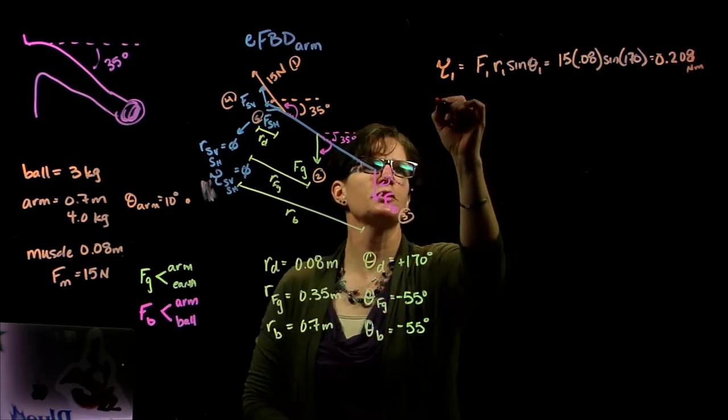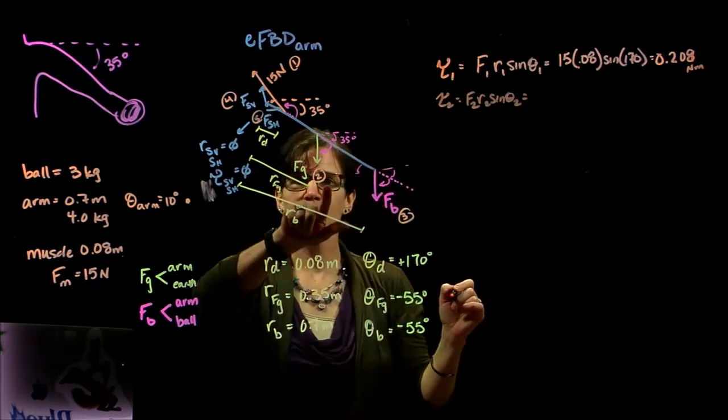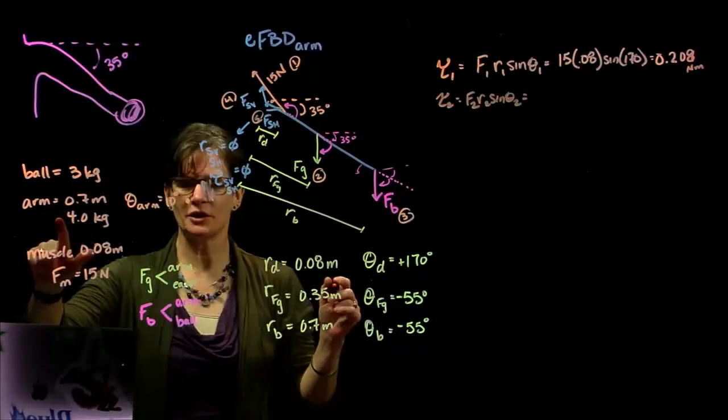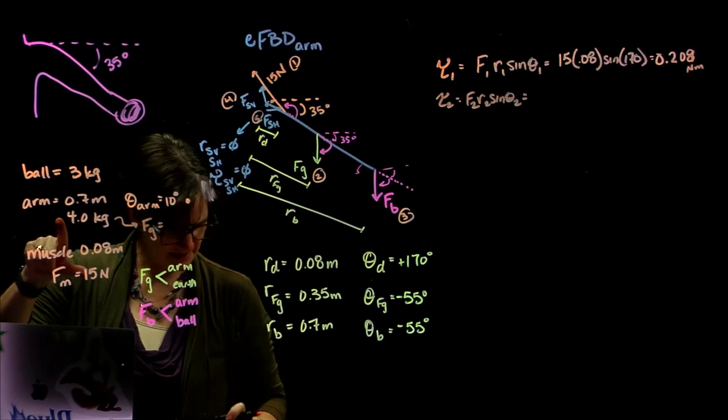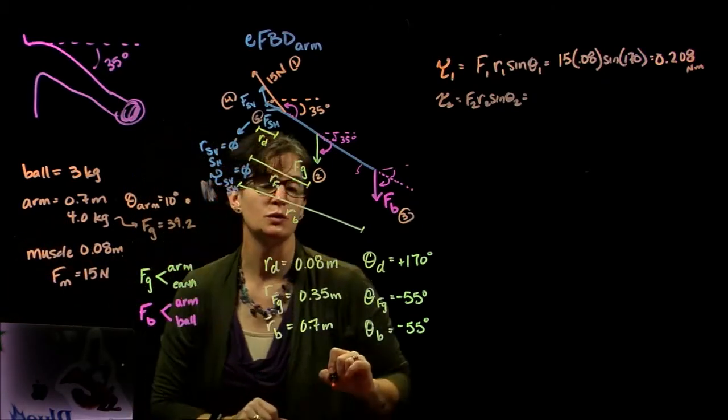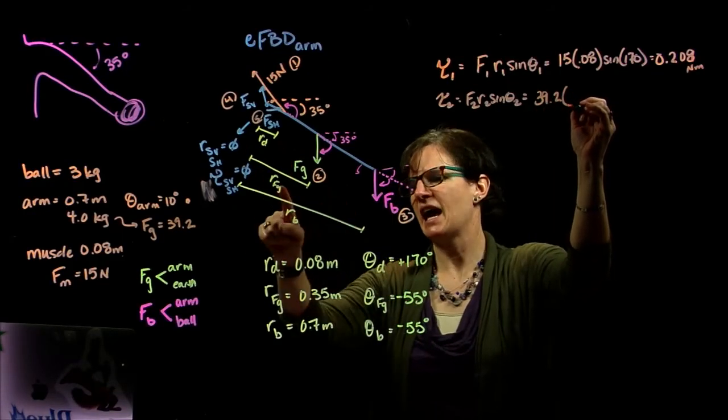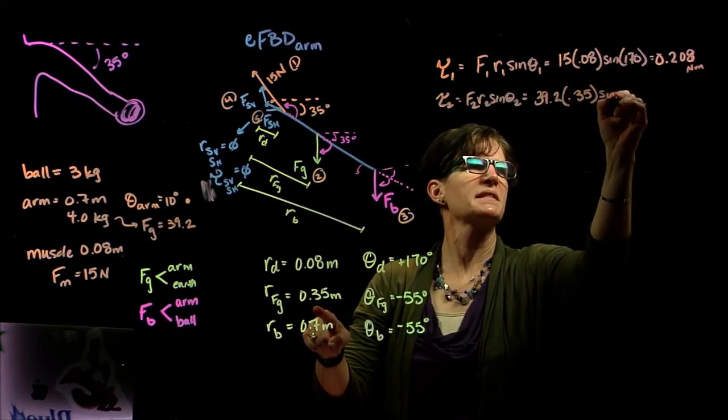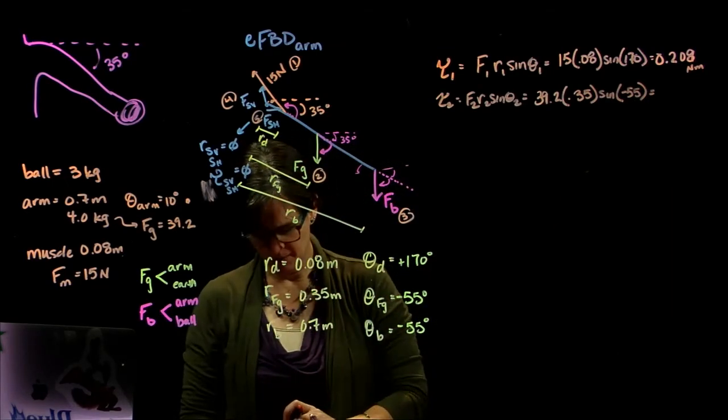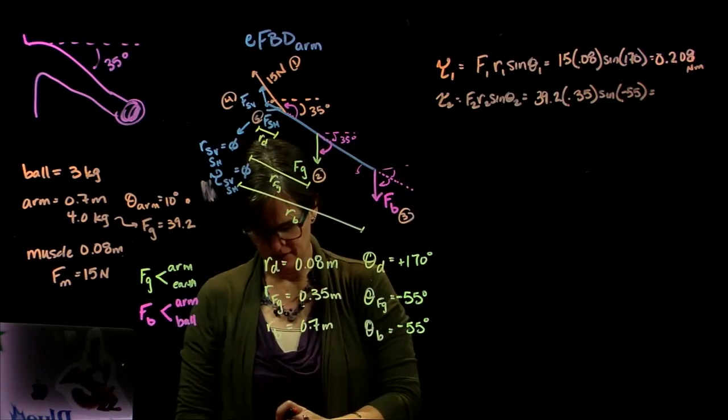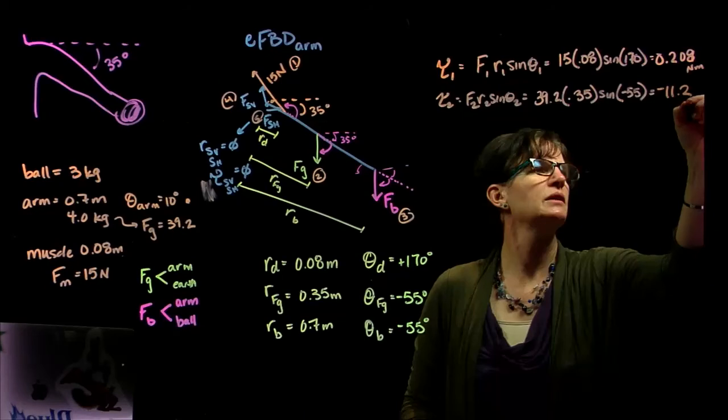All right, torque number 2, force 2, radius 2, sine theta 2. Force 2 is the weight of our arm. We are told the arm is 4 kilograms, so the weight of the arm is 4 times 9.8, which is 39.2 newtons. So we have 39.2, it's acting at 0.35, times the sine of negative 55, and we get negative 11.2 newton meters.